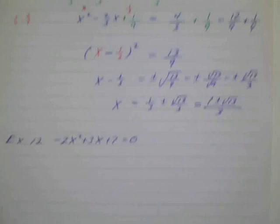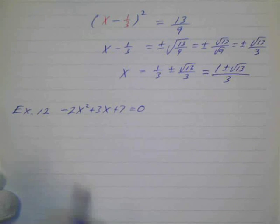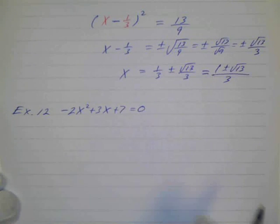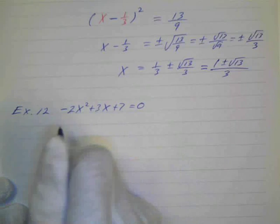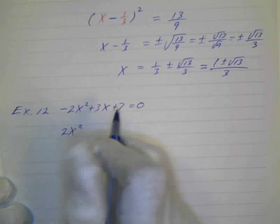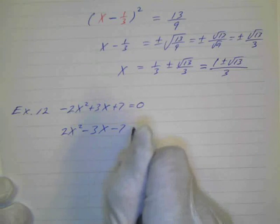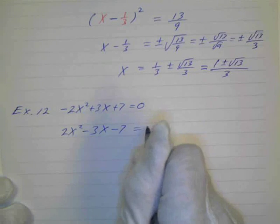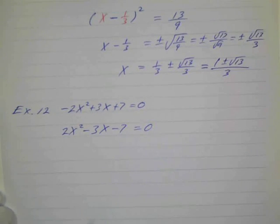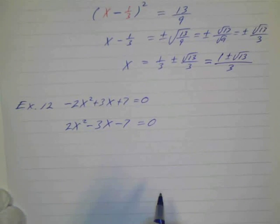Okay, and then example number 12, we've got a negative sign here. So I need to take care of that first so I can divide everything by a negative. So I can rewrite this as 2x squared minus 3x minus 7 equals 0. So that's one way to do it, or you could combine it with another step. This seems a little bit easier to me to kind of isolate this.